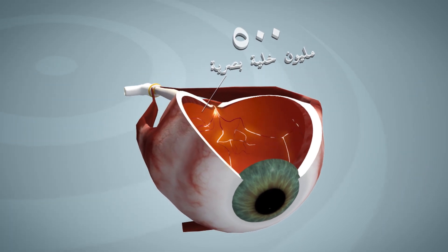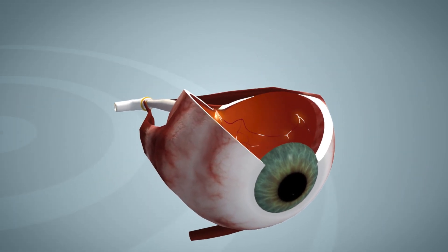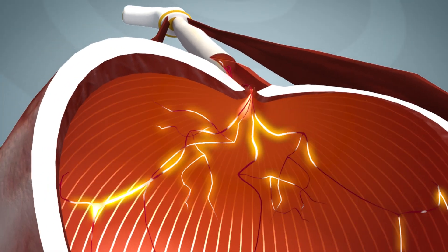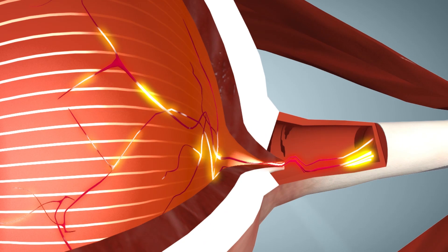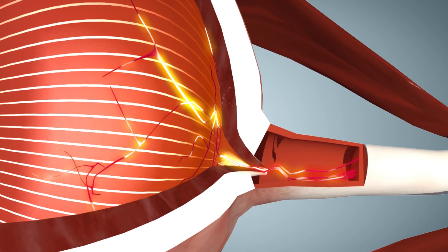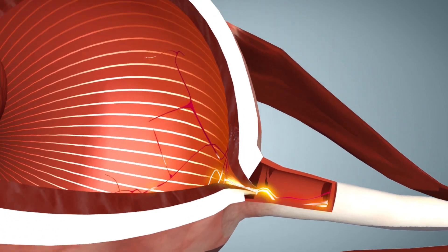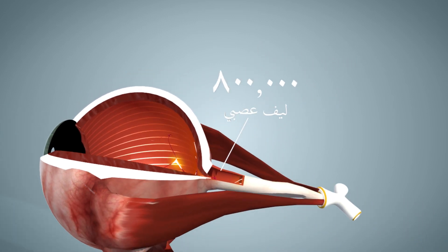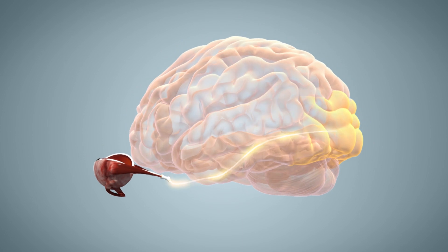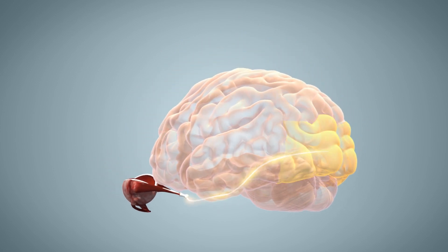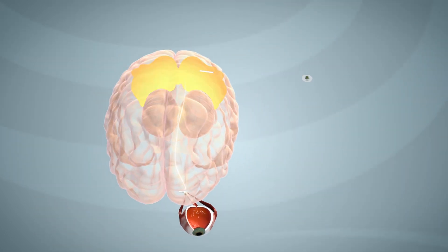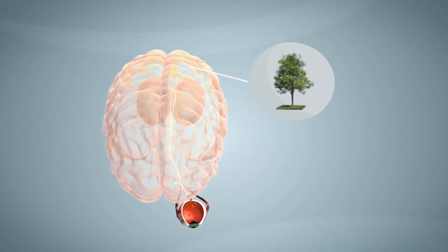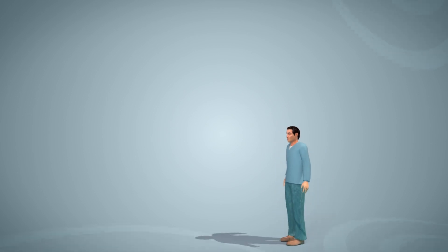العين تميز الضوء عن الظلام وتتحسس الألوان، ثم تخزن الصورة وتحولها إلى نبضات كهربائية دقيقة تنتقل إلى الدماغ عن طريق الألياف العصبية البصرية التي يقدر عددها بـ800 ألف ليف عصبي. وفي الدماغ يتم تكوين الصورة النهائية وإدراكها في عملية تسمى الرؤية — فنحن ننظر بأعيننا لكن الرؤية تتم في الدماغ.